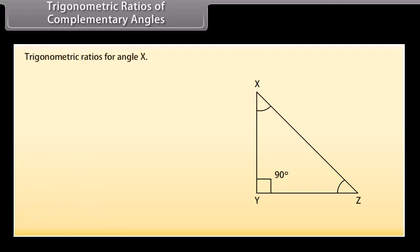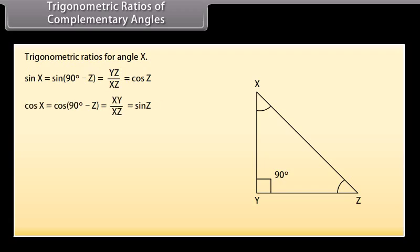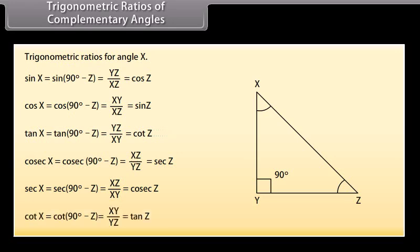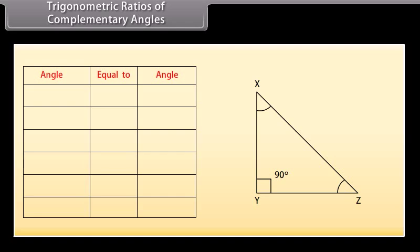The trigonometric ratios of angle X (= 90° − Z) are: Sin X = Sin(90° − Z) = Cos Z. Cos X = Cos(90° − Z) = Sin Z. Tan X = Tan(90° − Z) = Cot Z. Cosec X = Cosec(90° − Z) = Sec Z. Sec X = Sec(90° − Z) = Cosec Z. Cot X = Cot(90° − Z) = Tan Z.